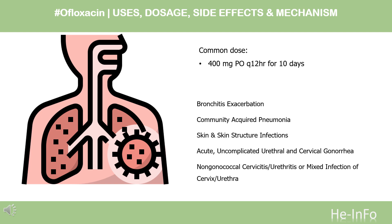Uncomplicated cystitis due to E. coli or K. pneumoniae: 200 mg, PO Q12HR, for 3 days. Due to other approved pathogens: 200 mg, PO Q12HR, for 7 days. Limitations of Use: Reserve fluoroquinolones for patients who do not have other available treatment options for uncomplicated urinary tract infections.